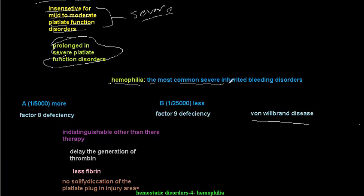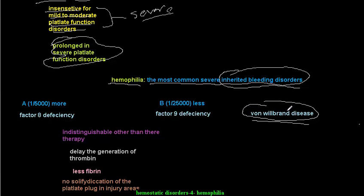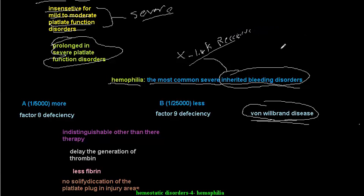Hemophilia is the most common severe inherited bleeding disorder. Von Willebrand disease is not inherited in the same way — it is the most common congenital bleeding disorder overall. Hemophilia is inherited as an X-linked recessive condition. Because of this, females will typically be carriers while males will be affected.